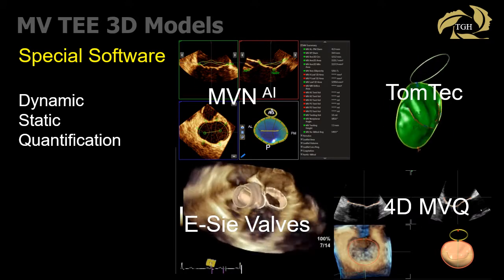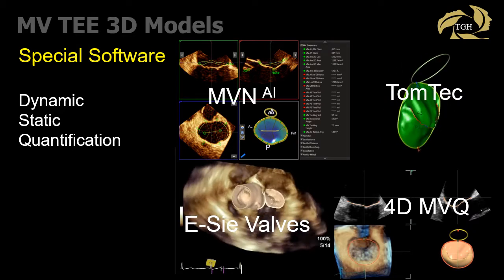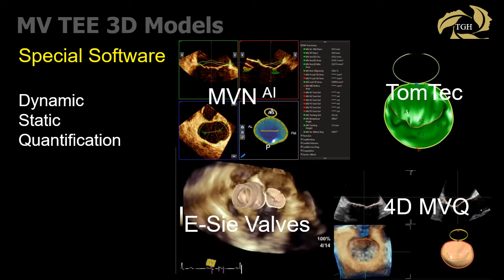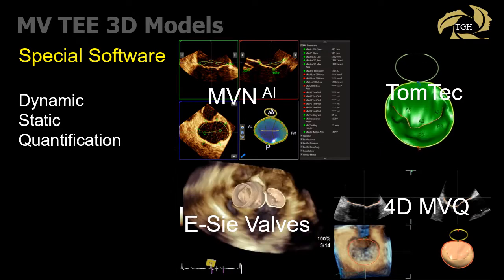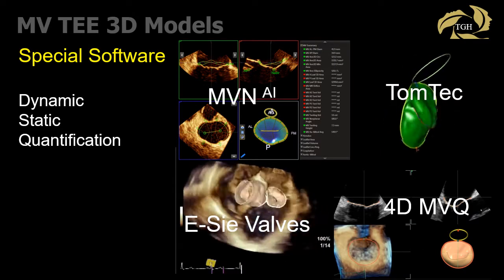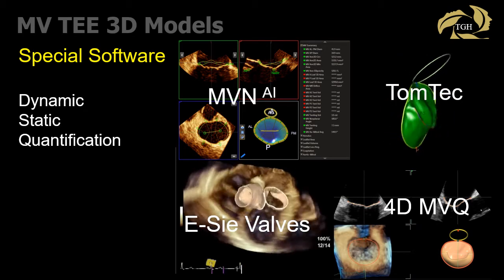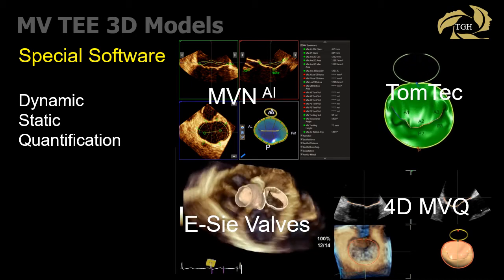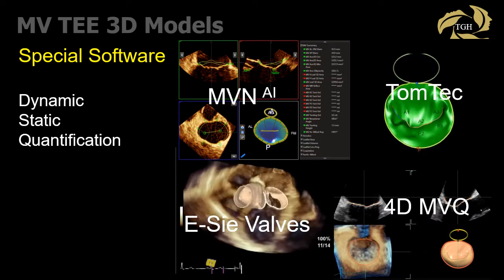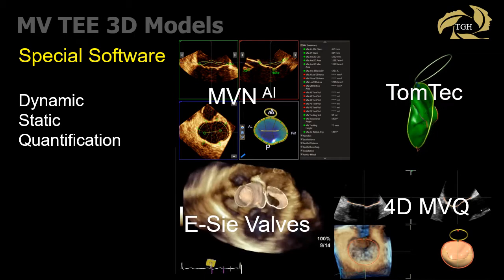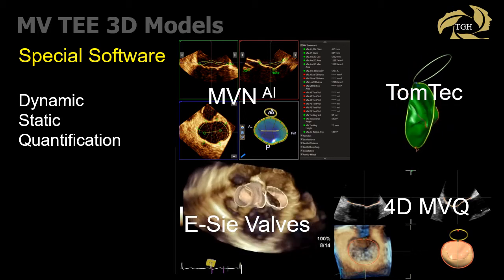Specific analysis software can create static or dynamic mitral valve models from 3D datasets. Most software is semi-automated, which reduces analysis time but does introduce error from inaccurate tracking. The mitral valve AI software, or QLAB, gives a static end-systolic model. The EasyValve software yields a dynamic systolic and diastolic model of both the mitral valve and aortic root. The TOMTEC and new 4D Mitral Valve Q software from GE gives dynamic systolic models. The newer Philips machines have TOMTEC software in place of the Mitral Valve N software.